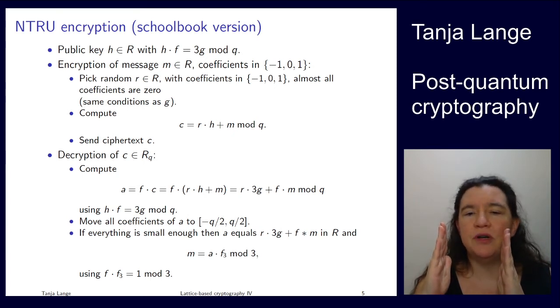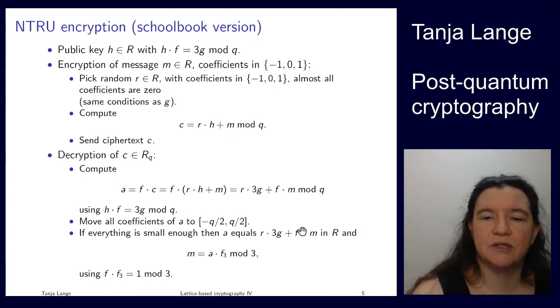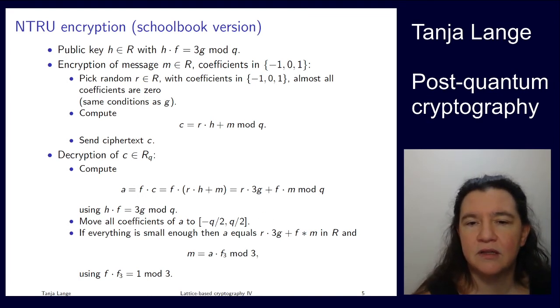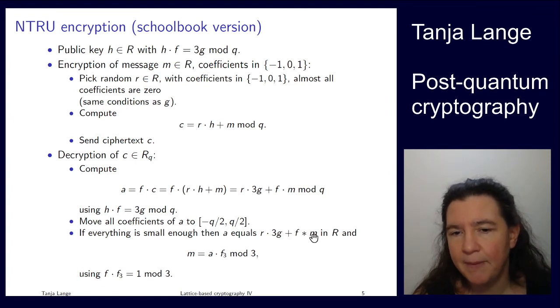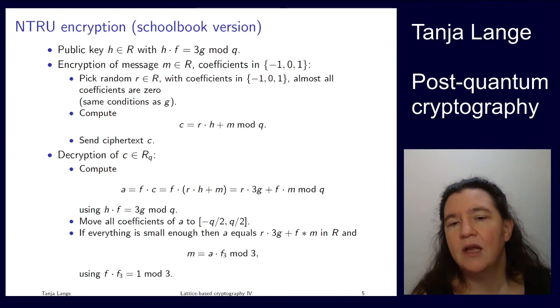Okay, so now I have my coefficients of a fixed in this interval. And then, if everything is small enough, this star should be just a plus, a times, sorry for that. So this is the same expression as up here. If everything is small enough, we're now computing mod 3. So the mod 3 nukes this 3 times g times r. So then if we're computing mod 3, we're only left with f times m in our a. And then, we want to get rid of this f. And that's why we had this f_3, which was the inverse of f mod 3. Okay, so we're taking this a which we computed here, mod 3 and multiplying by f_3. And those cancel out. We're just left with a message.